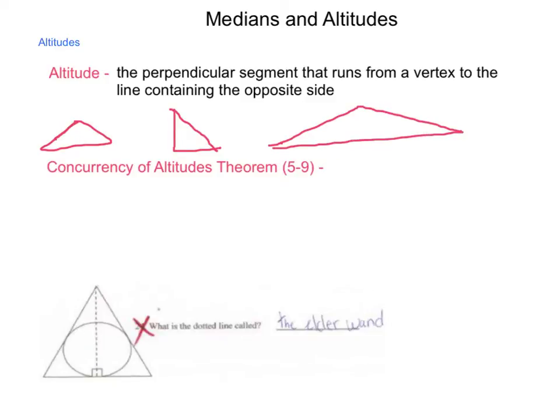If we're looking at an obtuse triangle, then the concurrence point is actually going to be outside of the triangle itself. So our other points, our incenter, our circumcenter, and our centroid, were always inside of the triangle. For the altitudes, it can fall outside.